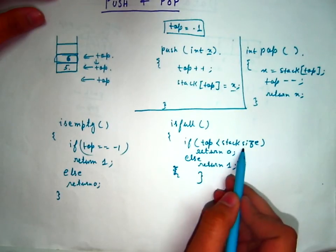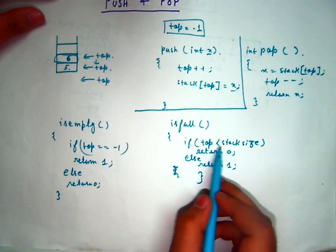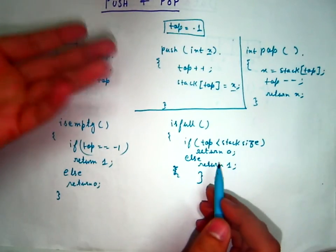If top is less than stack size, return 0, else return 1. Top can be less than stack size or equals to stack size in any condition.